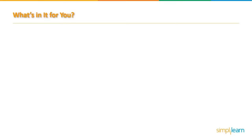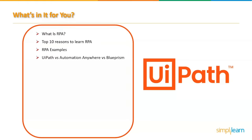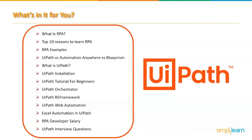Here is the list of topics covered. We will first understand what is RPA, then look at the top 10 reasons to learn robotic process automation, see some real-time RPA examples, and compare RPA tools like UiPath, Automation Anywhere, and Blue Prism. We will then learn what UiPath is, how it's installed, and cover the UiPath tutorial for beginners, UiPath Orchestrator, Robotic Enterprise Framework, Web Automation, Excel automation, RPA developer salaries, skills, resume, roles and responsibilities, and UiPath interview questions.